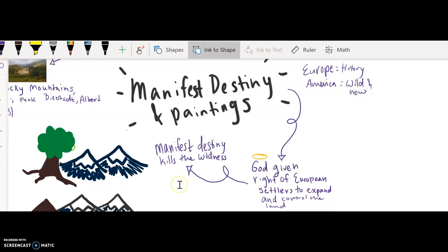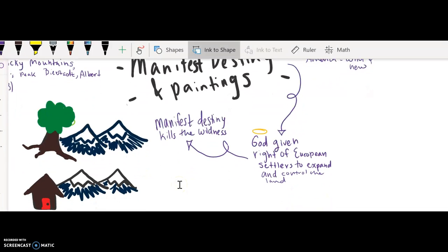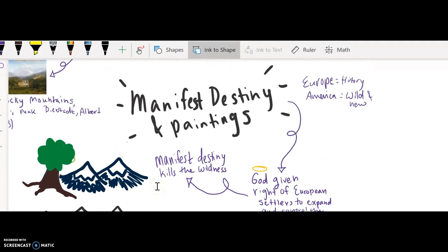And what ended up happening was, as they moved out, some of this wilderness ended up dying. I made this little crude drawing of this tree in these mountains and this tree that may have been portrayed in a painting eventually being cut down into a little log cabin for someone to exist in.